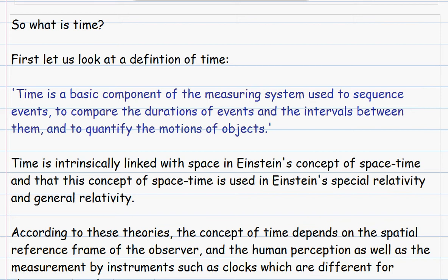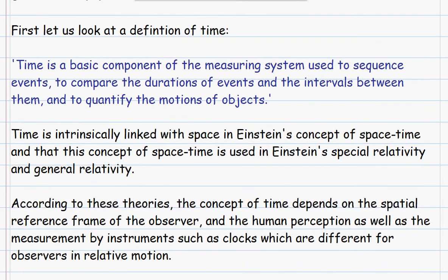Well, let's look at a definition. Time is a basic component of the measuring system used to sequence events, to compare the duration of events and the intervals between them, and to quantify the motions of objects.